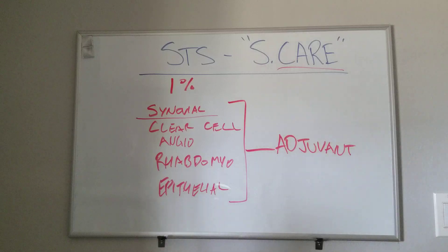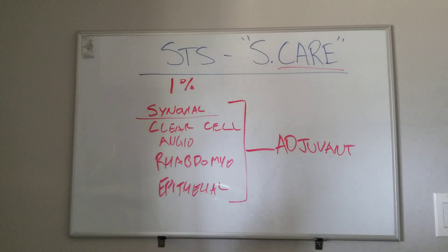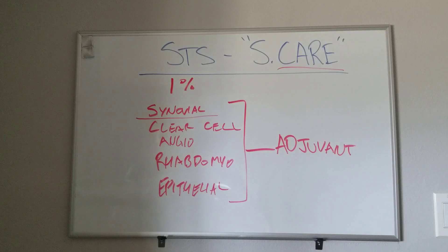But classically, it's SCARE for those five: Synovial, Clear cell, Angio, Rhabdomyo, and Epithelial sarcoma. All right, thanks.